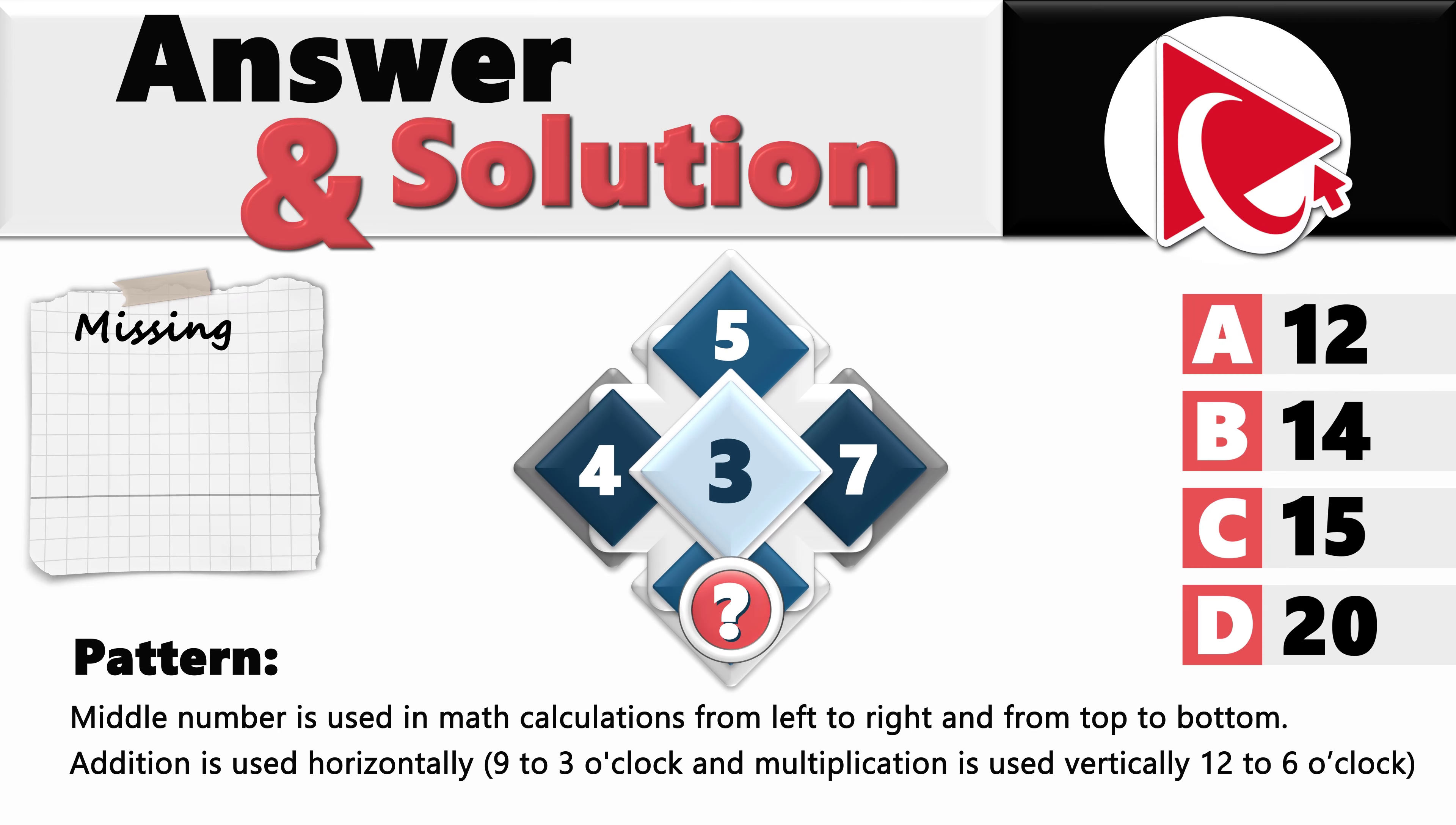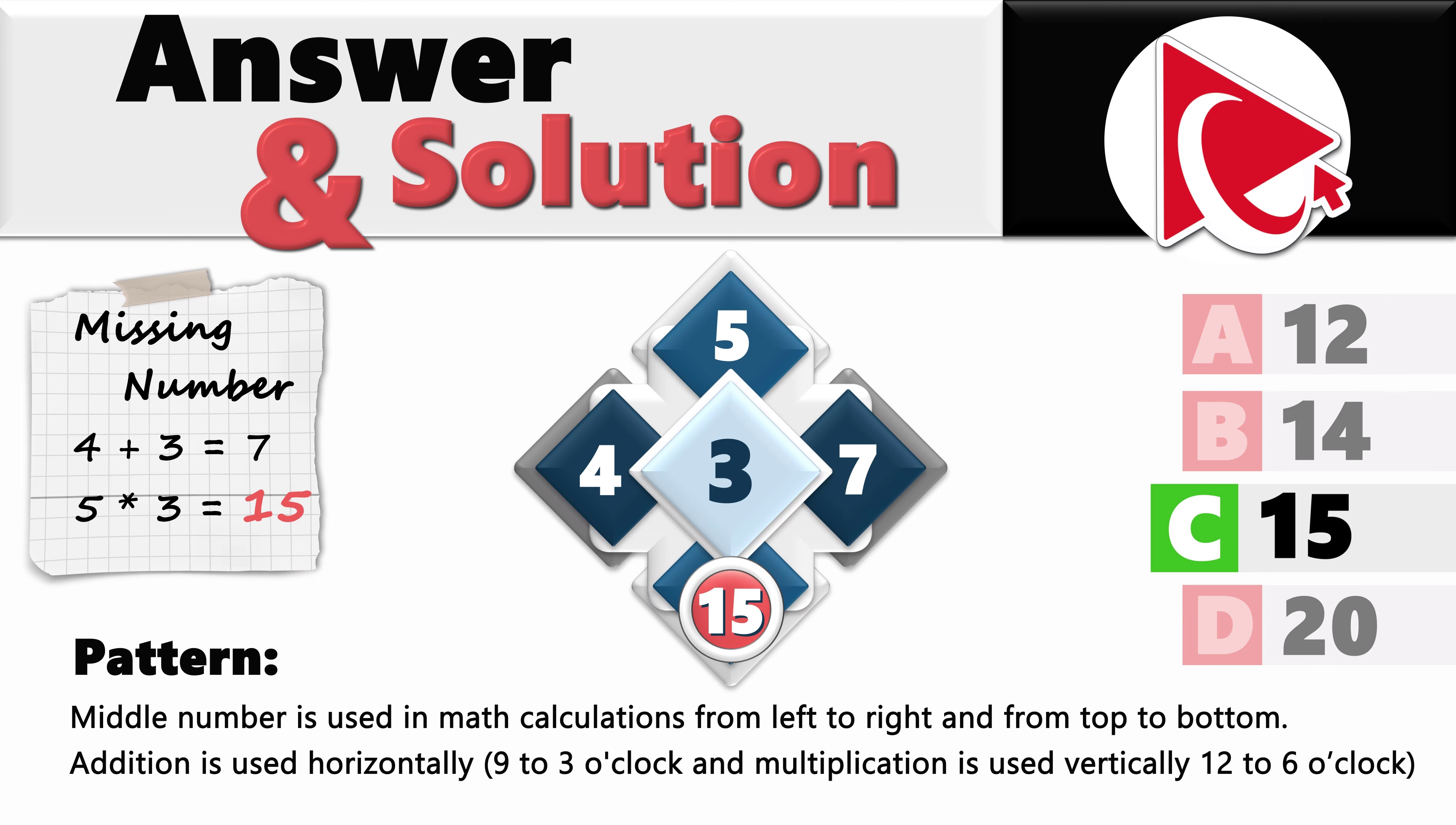With this in mind, you can easily calculate the missing number. So horizontally in the second diamond, 4 plus 3 equals 7 and vertically, 5 multiplied by 3 equals 15. So the correct answer here is choice C, 15.